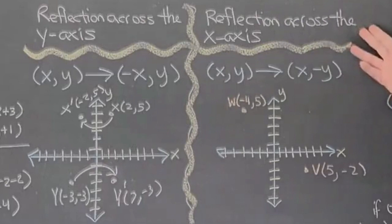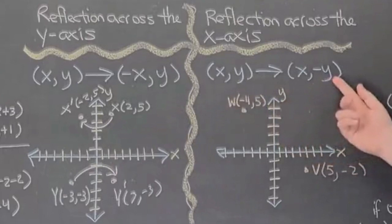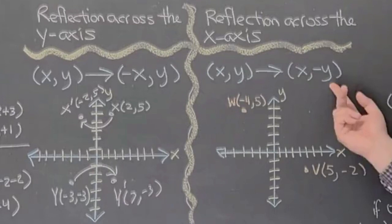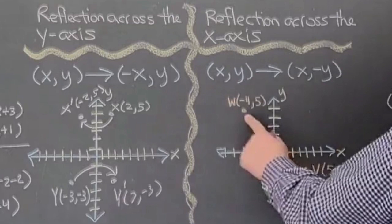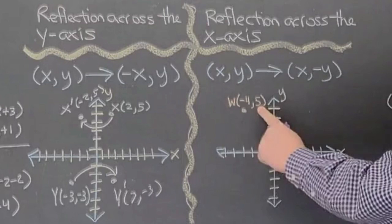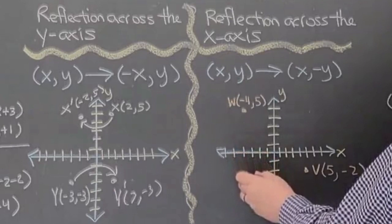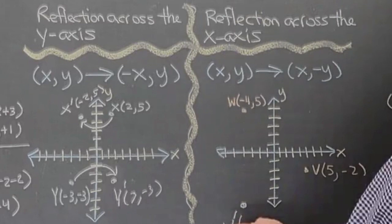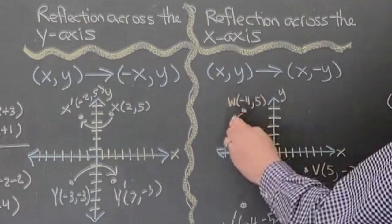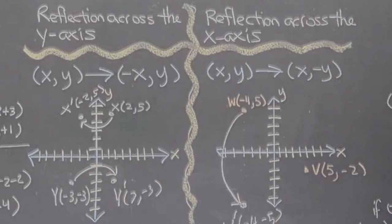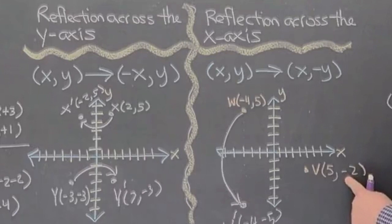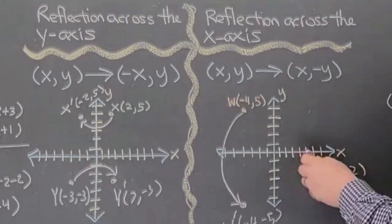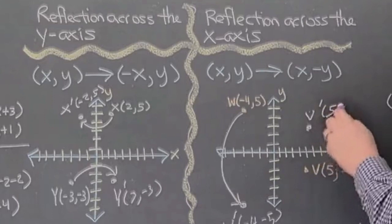Reflections across the x-axis: the ordered pair (x, y) becomes (x, negative y), meaning we change the sign of the y value. Here's negative four comma five — changing the y sign gives negative four comma negative five. That's W prime, a reflection over the x-axis. Here's five comma negative two — changing y gives five comma two, which is V prime, also a reflection over the x-axis.